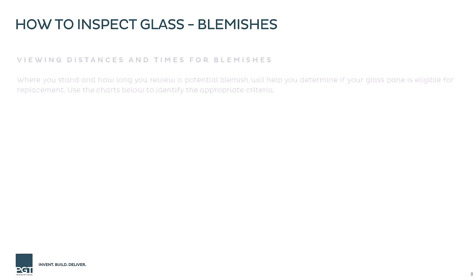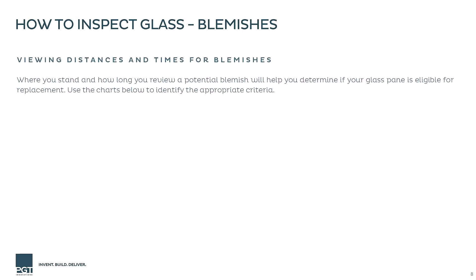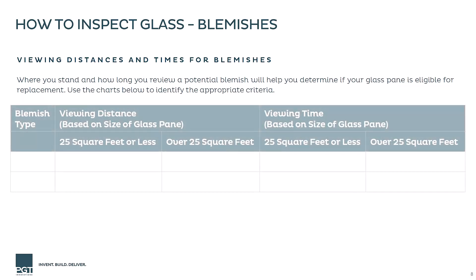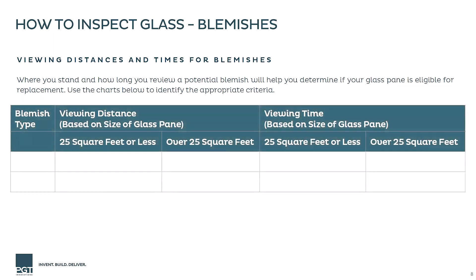To determine your appropriate viewing distance, begin by matching the possible defect to either the description of a point blemish or a linear blemish. Next, you'll want to determine if your glass is larger or smaller than 25 square feet. If you are unsure of your unit size, try to imagine a 5 foot by 5 foot square — this is equivalent to 25 square feet. Once you've approximated the size, select the proper viewing distance from the table.